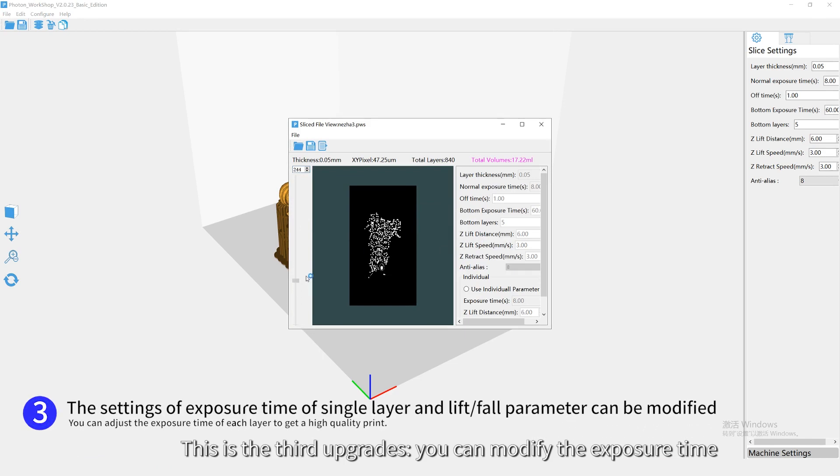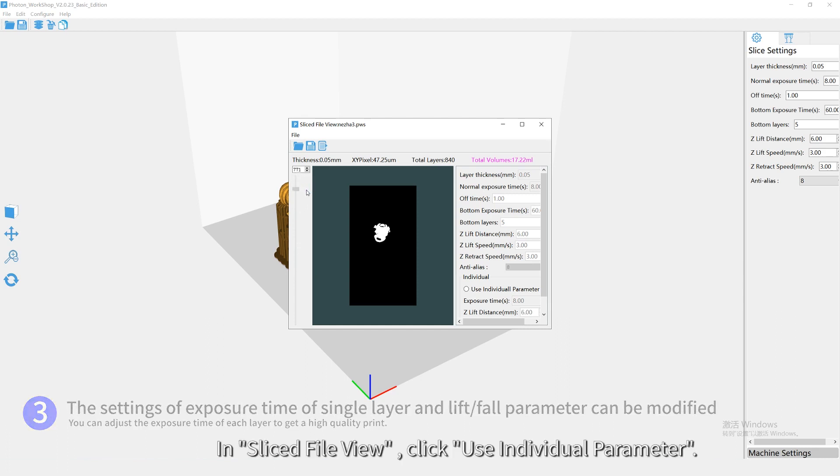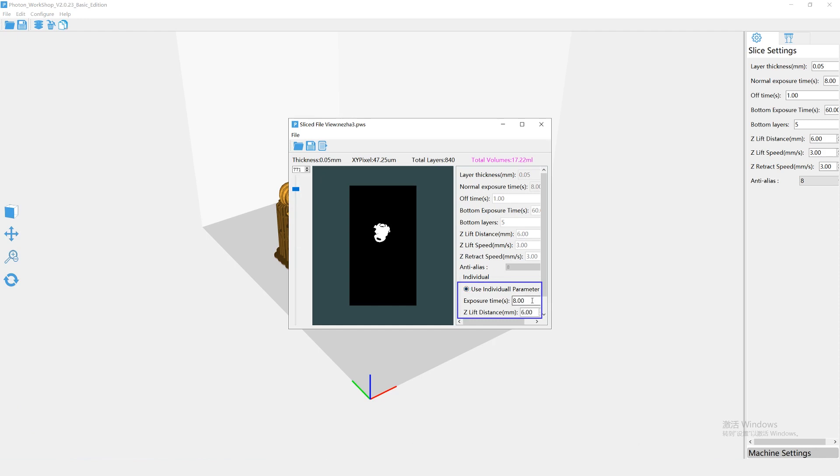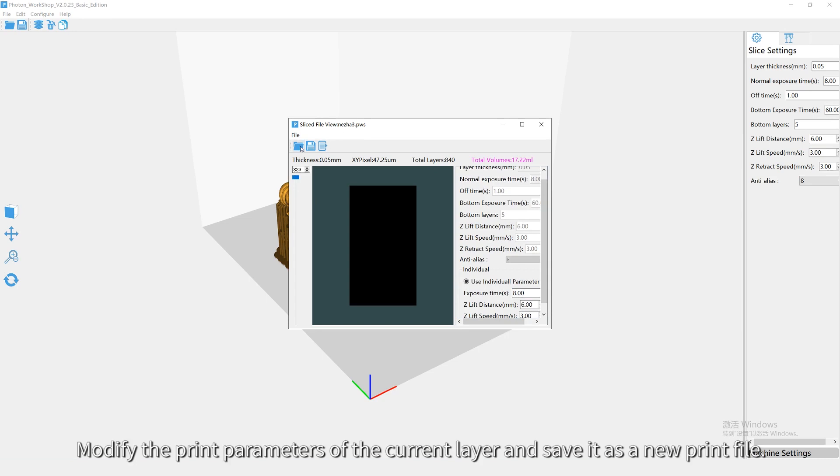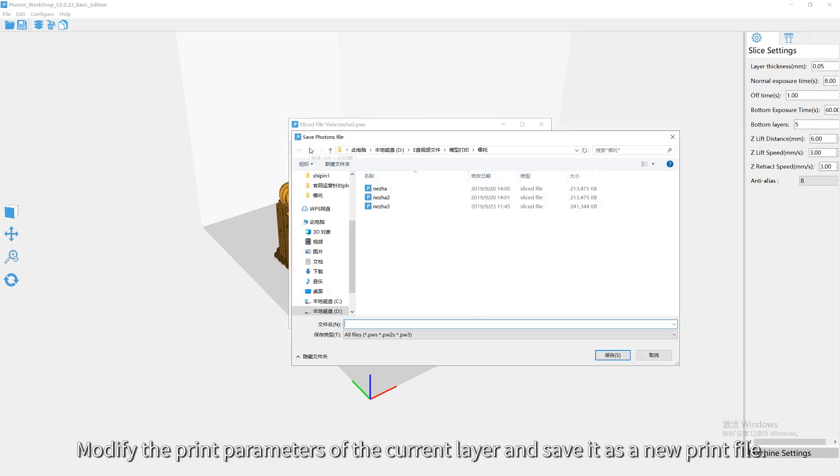You can modify the exposure time of single layer and lift all four parameters. In Slice the File view, click Use Individual Parameter. Modify the current layer and save it as a new print file.